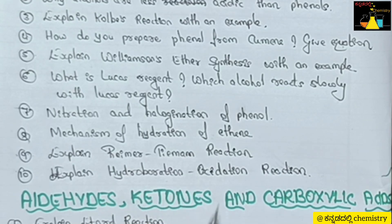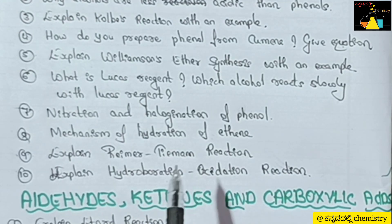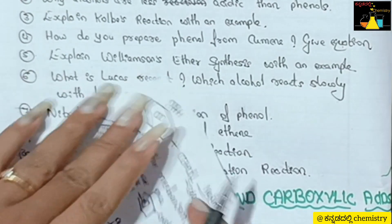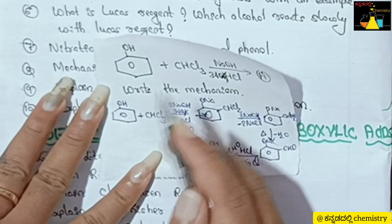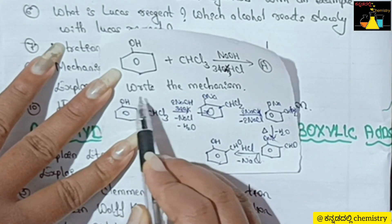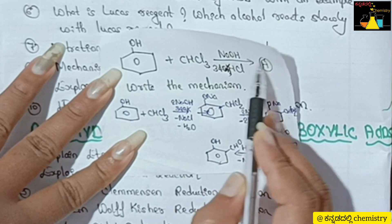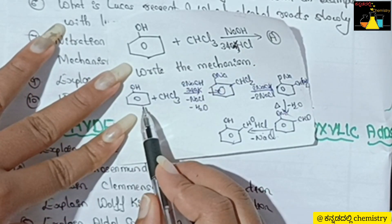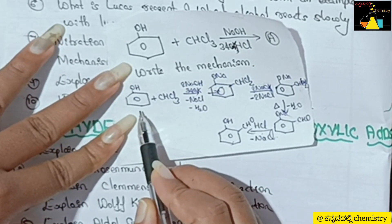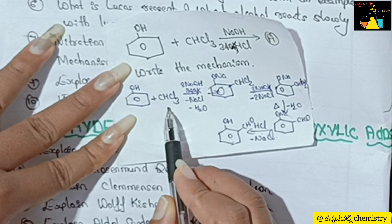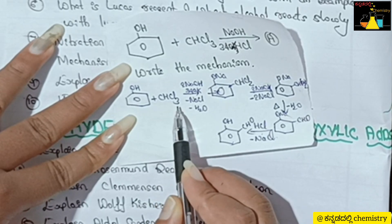For example, if you are asked to explain the Reimer-Tiemann reaction — it could be asked as a direct or indirect question. For instance, observe this question: write the mechanism and identify what compound A is. For example, phenol reacts with chloroform (CHCl3) in the presence of 2 moles of NaOH at 340 Kelvin.